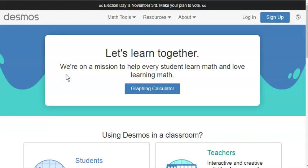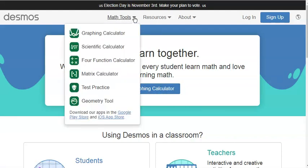Today we're going to talk about using the matrix calculator on Desmos. So first go to desmos.com and instead of clicking the graphing calculator button, go up to the top and click math tools and then click matrix calculator.